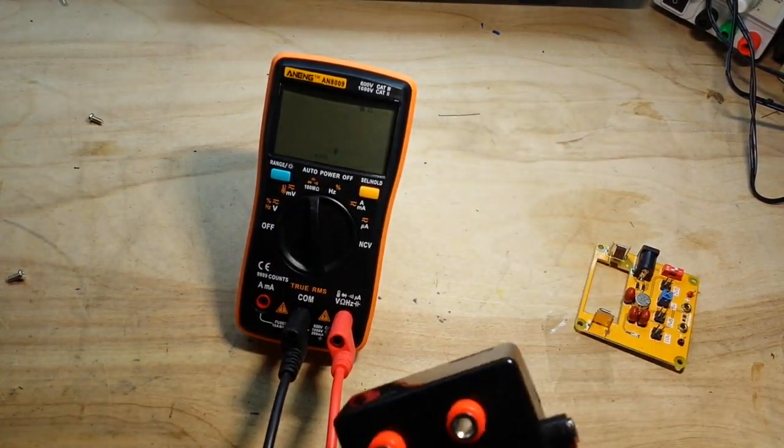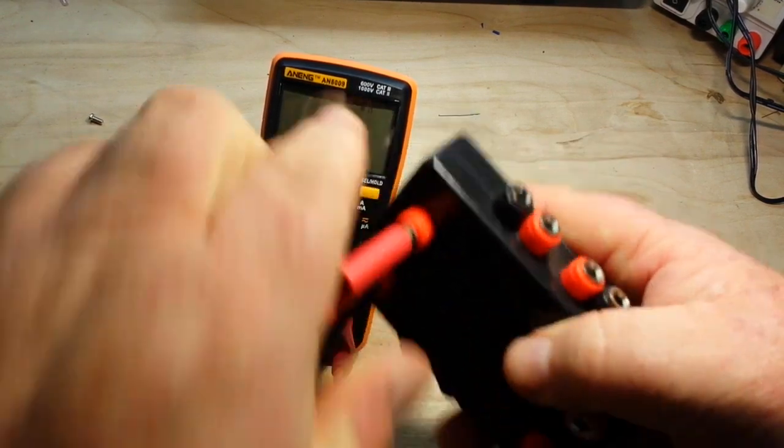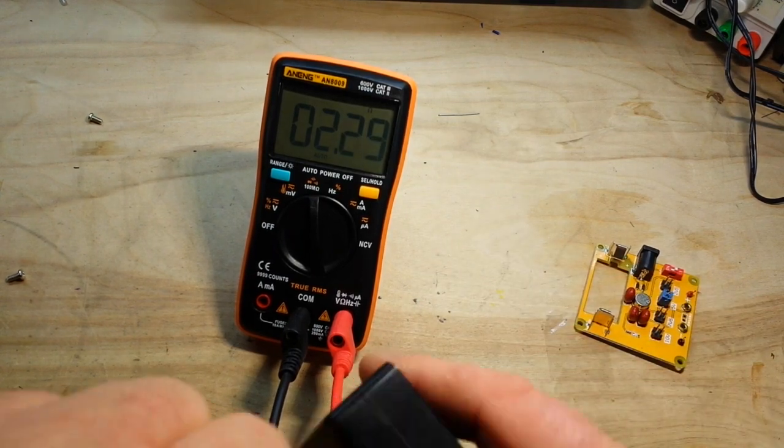2.2 ohms. These are the ones that are hard. These low ones. 2.2. 2.32. I'll take it.